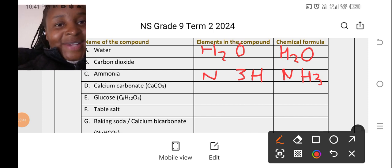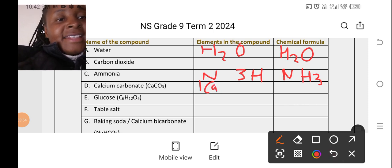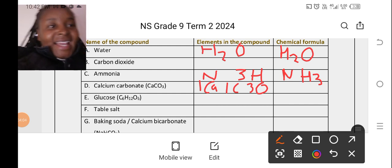What about calcium carbonate? It's calcium, so we have one calcium, one carbon, and we have three oxygens. The chemical formula they already gave us, that's calcium carbonate. Glucose, they also give us the chemical formula, but we just need to indicate the elements in the compound.